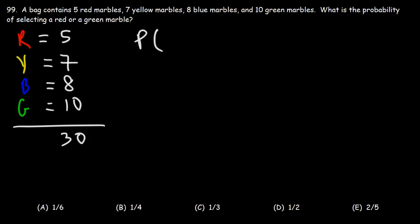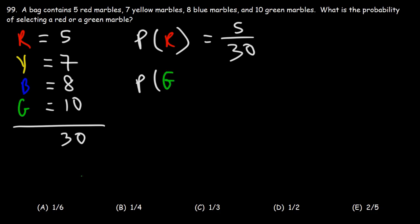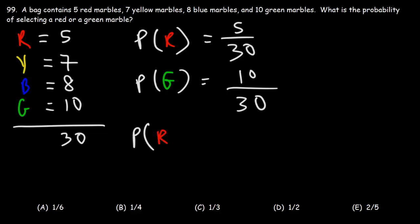What is the probability of selecting a red marble? This is going to be the number of red marbles divided by the total number of marbles in the bag, so it's 5 out of 30. The probability of selecting a green marble is going to be 10 green marbles out of the 30 in the bag. So what about the probability of selecting a red marble or — keyword 'or' — a green marble?